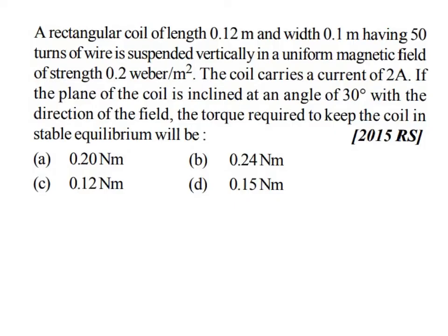Here is a problem from Moving Charges and Magnetism. A rectangular coil of length 0.12 meter and width 0.1 meter, having 50 turns of wire, is suspended vertically in a uniform magnetic field of strength 0.2 Weber per meter square. The coil carries a current of 2 ampere. If the plane of the coil is inclined at an angle of 30 degrees with the direction of the field, the torque required to keep the coil in stable equilibrium will be?